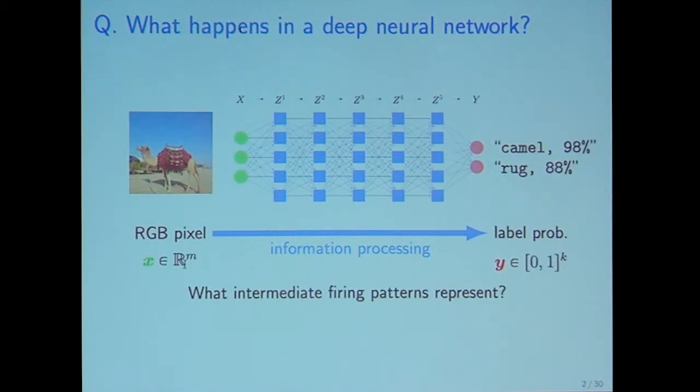This is a sketch of deep neural network. We input a still image from left side, called the input layer, and then the neurons fire and blink, communicating information from left to right. Then at the final layer, the red one called output layer, the neural network says camel 98% and rug 88%.